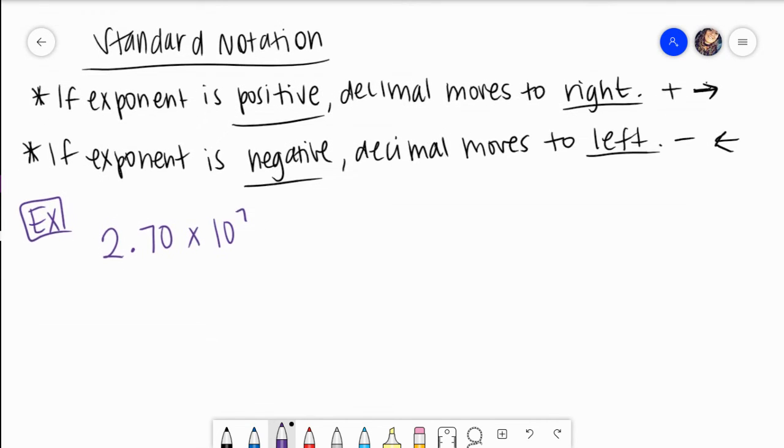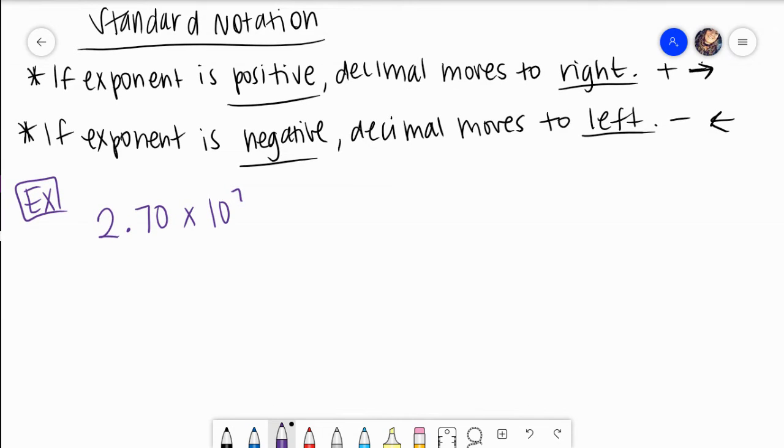So, let's see. What did my notes say? My notes said that if my exponent is positive, good it is, decimal moves to the right. So let me rewrite by itself, and let's move it to the right how many times? Yep, whatever the number our exponent is, seven times.